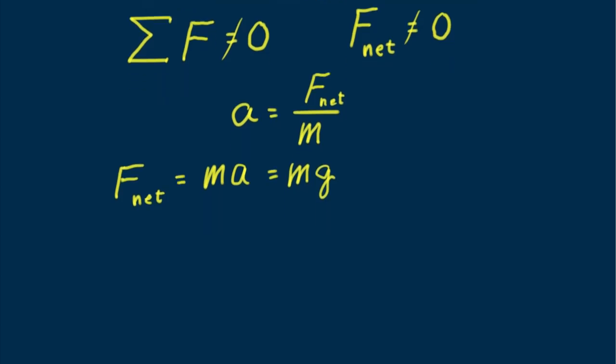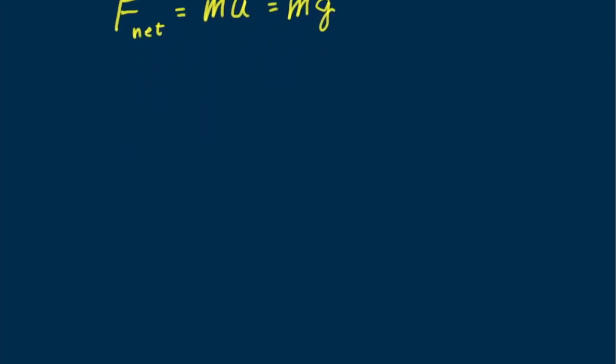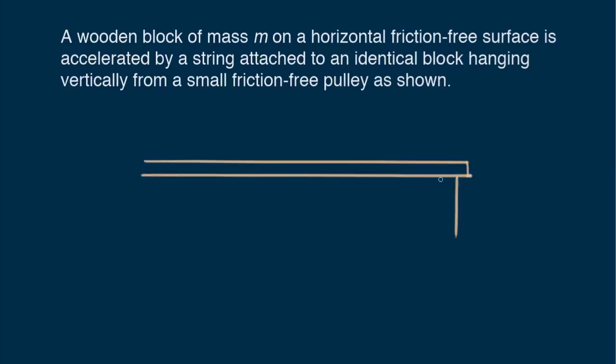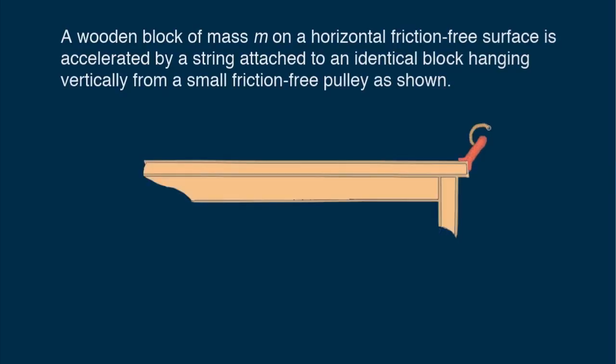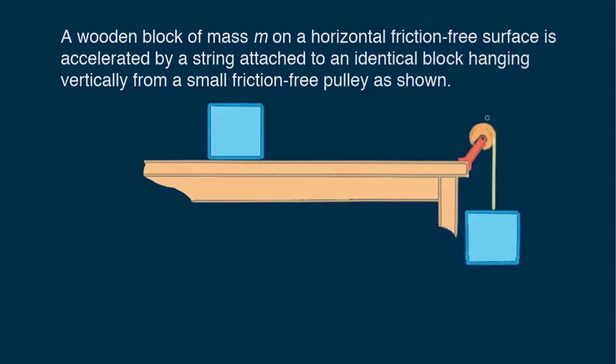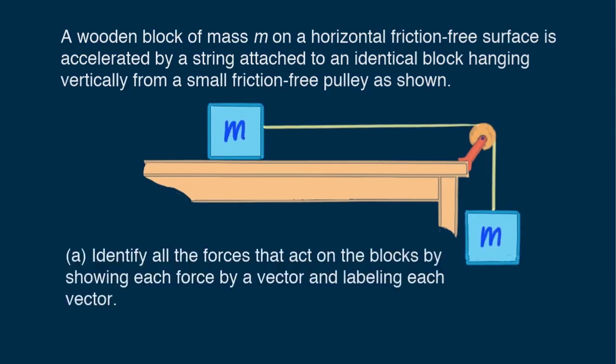Let's put this information to use with this sample problem. A wooden block of mass m on a horizontal friction-free surface is accelerated by a string attached to an identical block hanging vertically from a small friction-free pulley, as shown. Identify all the forces that act on the two blocks by showing each force as a vector and labeling each vector.